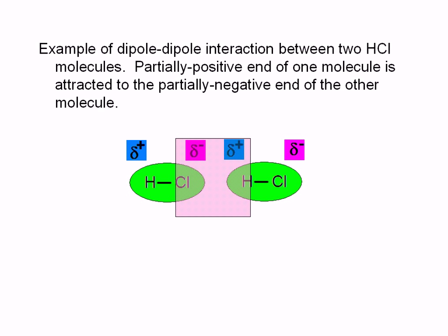Attraction occurs between the two molecules because of these partial charges. The partial negative end of one molecule is attracted to the partially positive end of the other molecule.